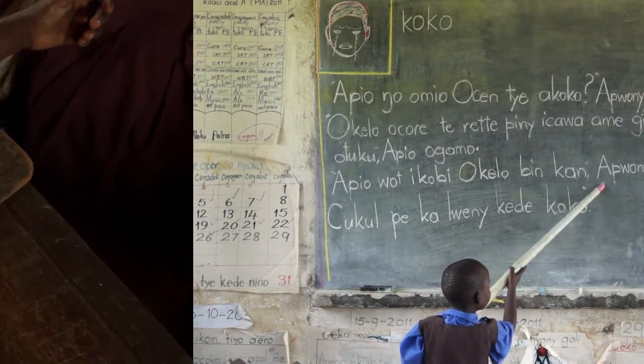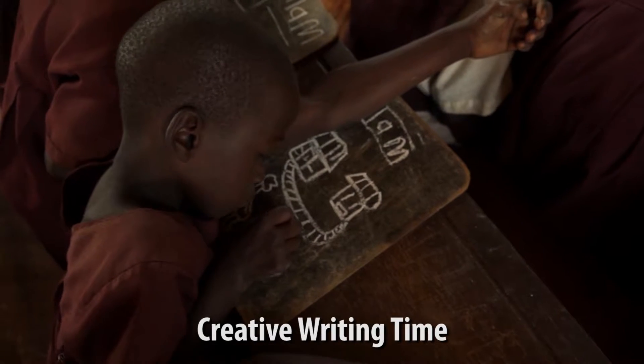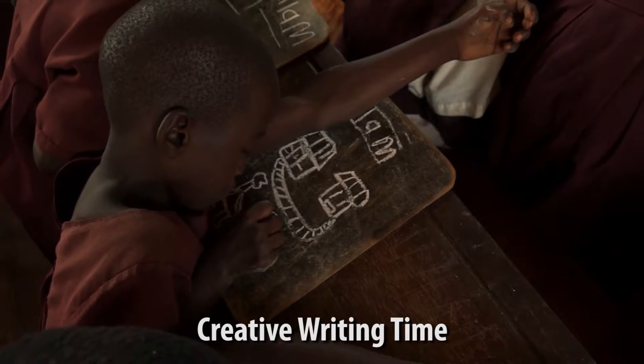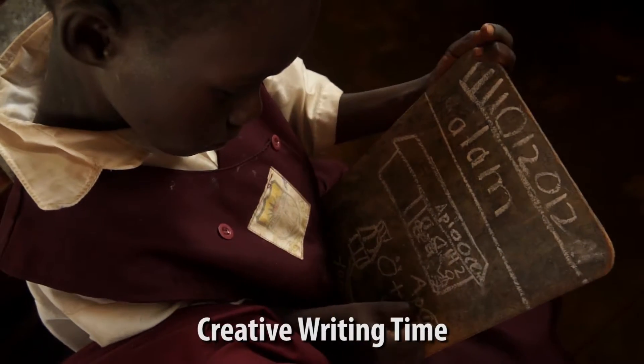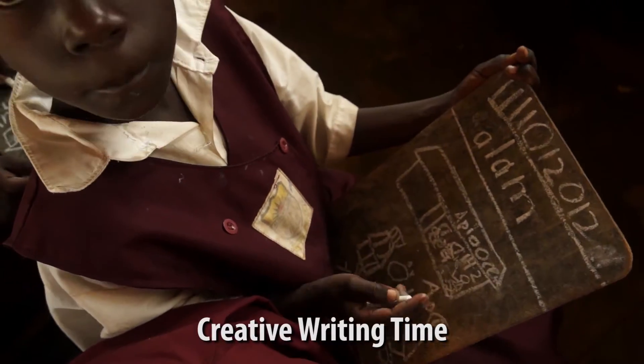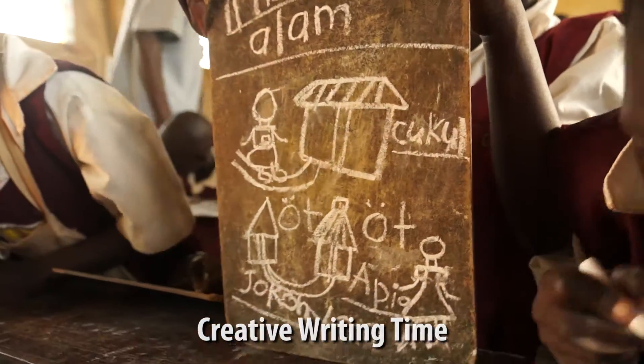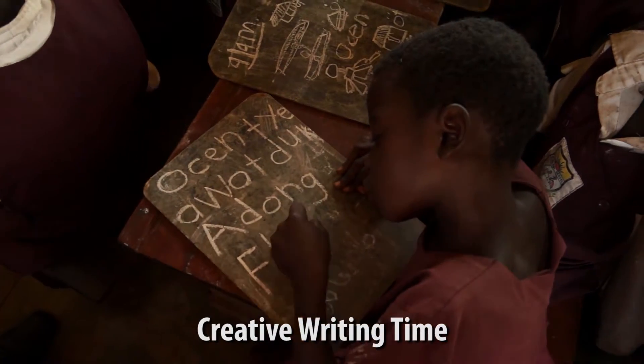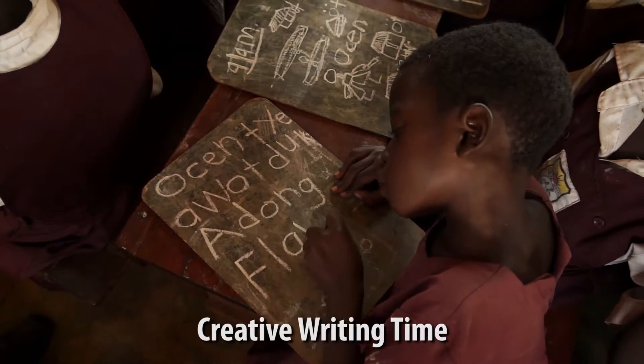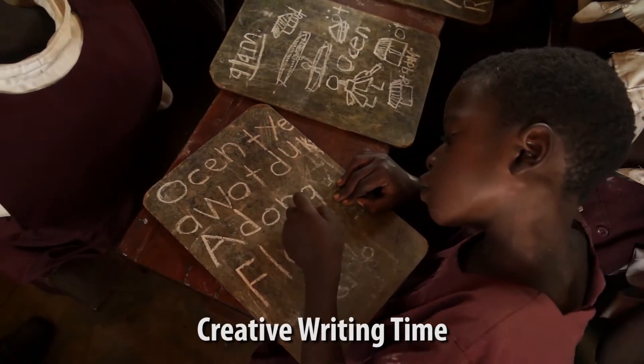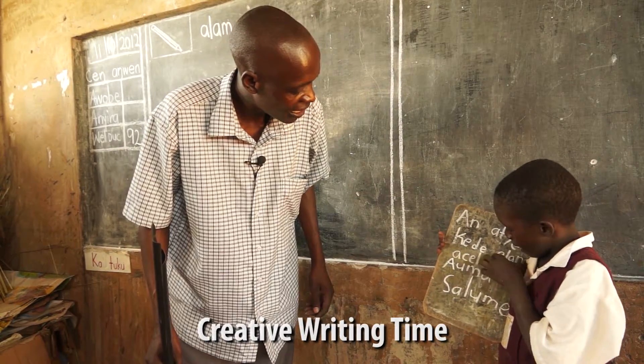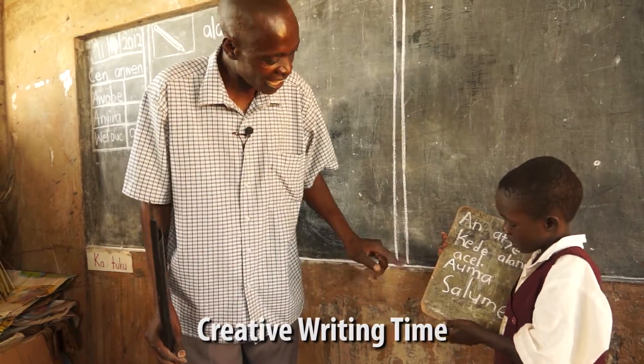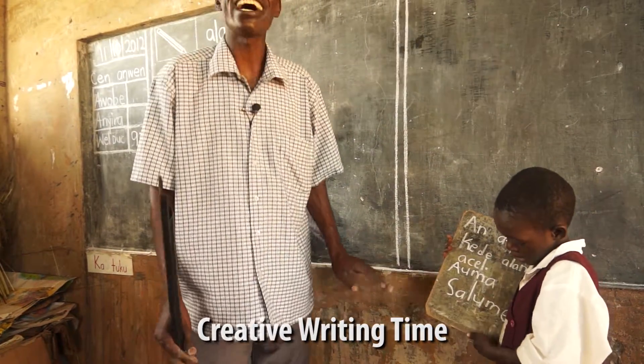The second literacy lesson of the day is creative writing time. It is a top-down writing lesson. Pupils write their own stories based on the key word of the week. Again, the focus is on writing fluency, vocabulary, and comprehension. The pupils also practice speaking competences as they read their stories to the class every day.